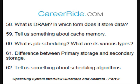Differentiate between primary storage and secondary storage. Primary memory storages are temporary, whereas secondary storage is permanent. Primary memory is expensive and smaller, whereas secondary memory is cheaper and larger. Primary memory storages are faster, whereas secondary storages are slower. Primary memory storages are connected to the CPU through data buses, whereas secondary storages are connected through data cables.